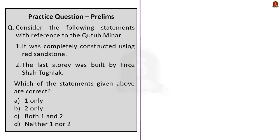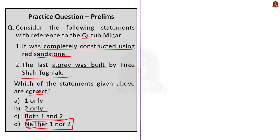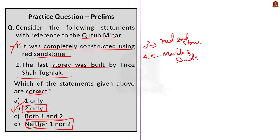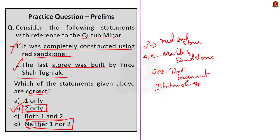Third question — consider the following statements with reference to Qutb Minar. Statement 1: it was completely constructed using red sandstone. Statement 2: the last story was built by Firoz Shah Tughlaq. Which of the statements is or are correct? Option A: 1 only, B: 2 only, C: both 1 and 2, D: neither 1 nor 2. The correct answer is option B — 2 only. Statement 1 is incorrect because the first three stories are made of red sandstone while the fourth and fifth stories are of marble and sandstone. Statement 2 is correct — construction was begun by Qutb-ud-Din Aibak, his successor Iltutmish added three more stories, and in 1368 Firoz Shah Tughlaq constructed the fifth and last story.